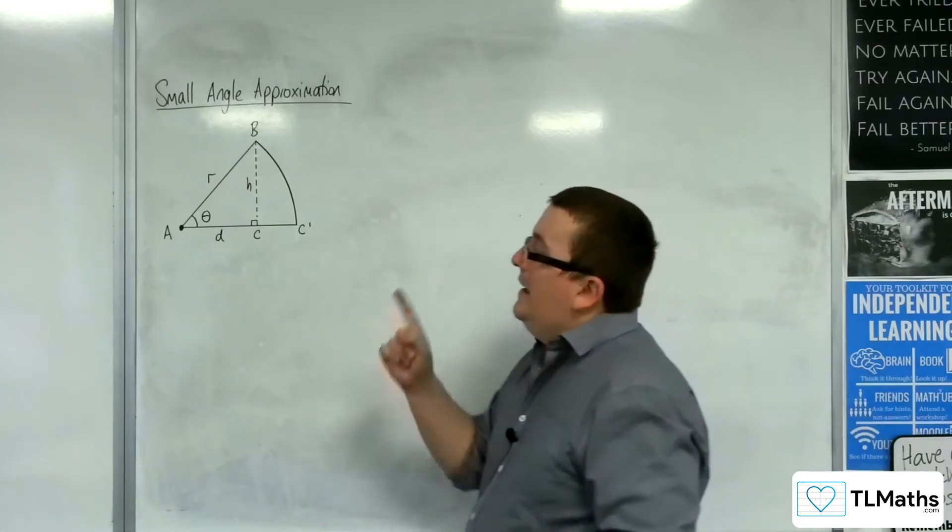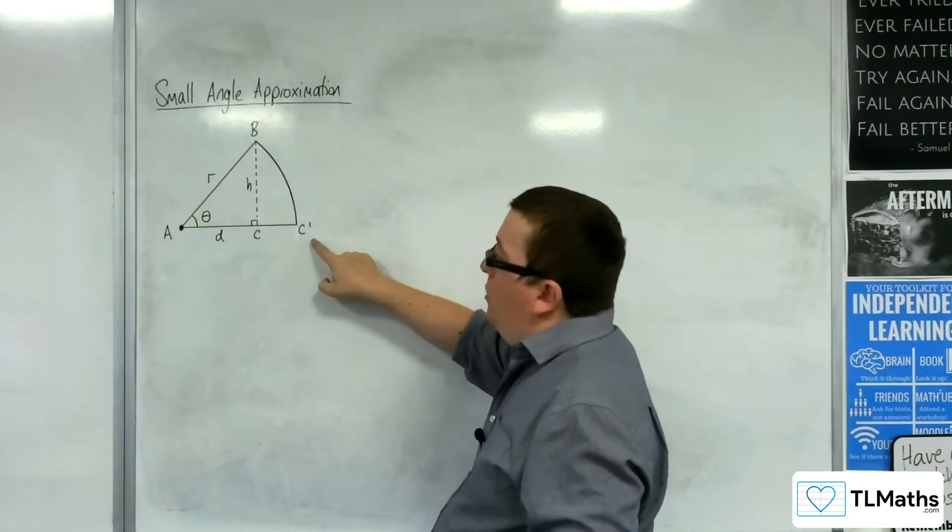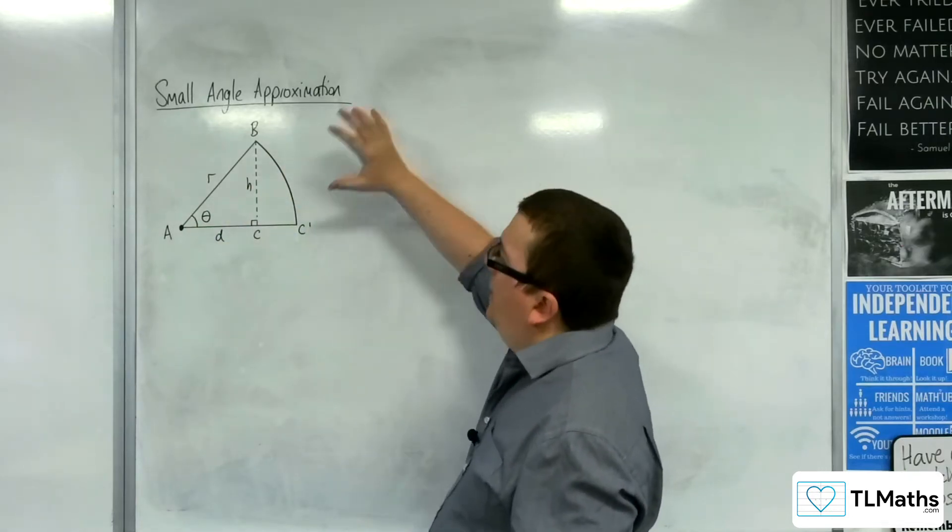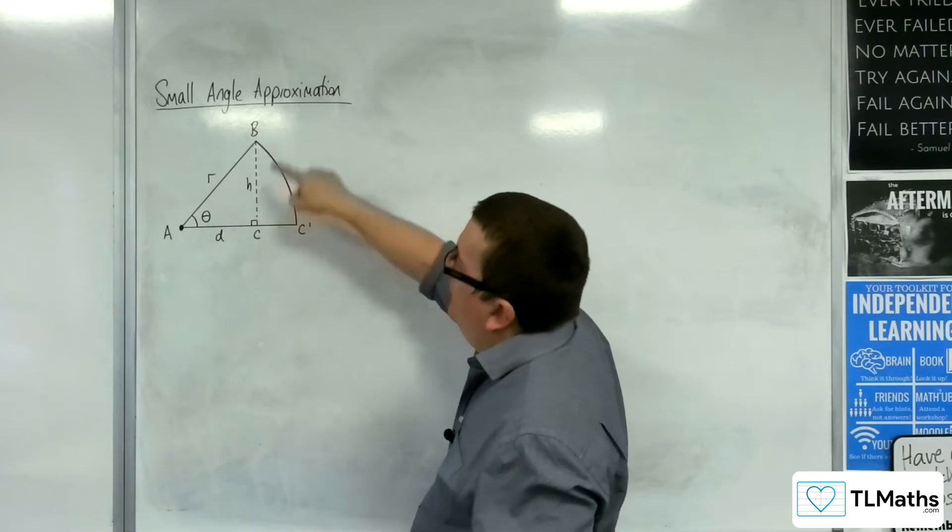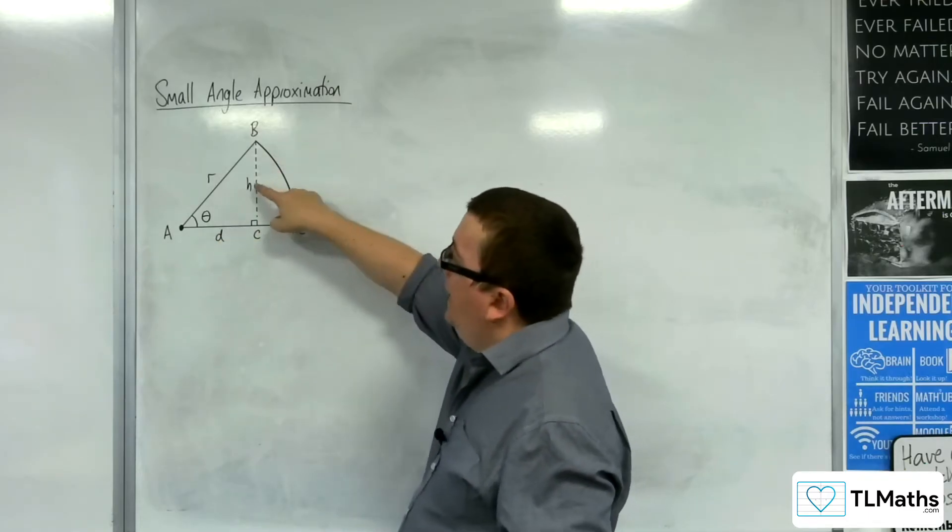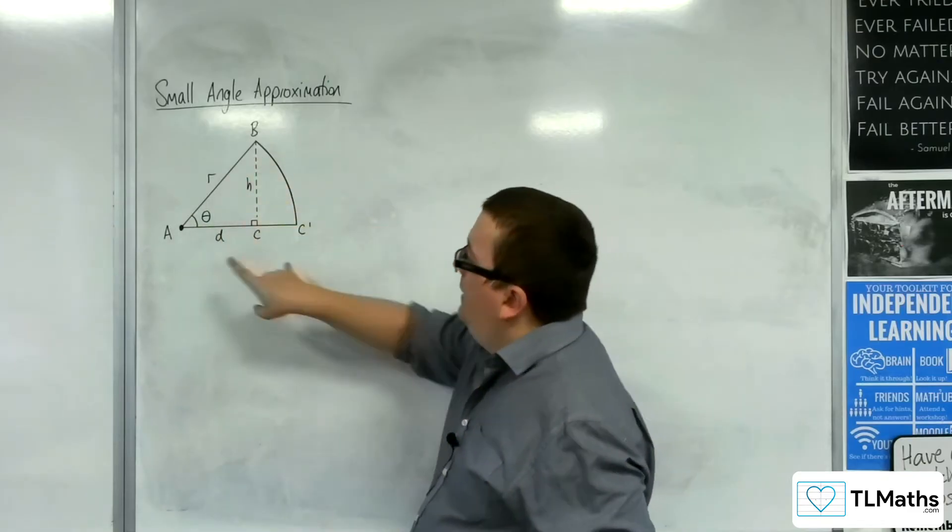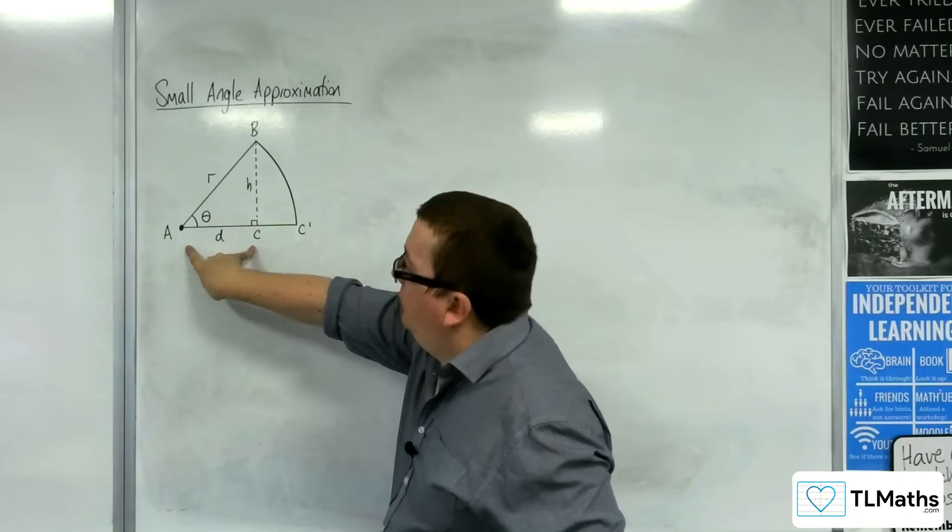So what we've got here is a sector A, B, and C prime. Now this dotted line here is perpendicular to the line AC prime, and it has length H. R here is the radius of your sector, and D is the length AC.